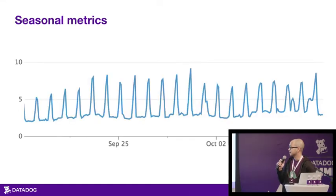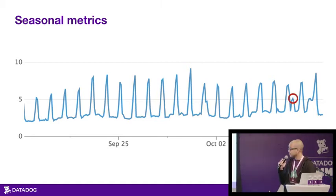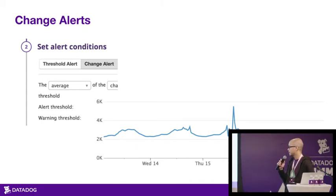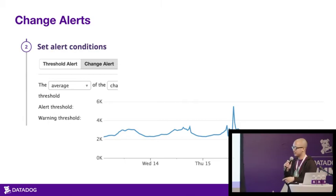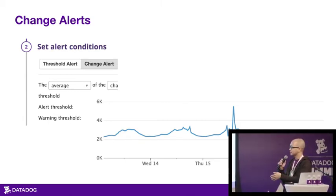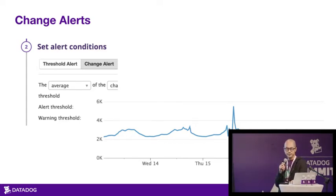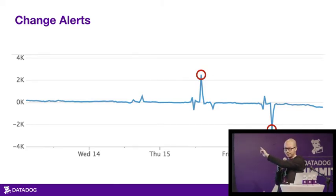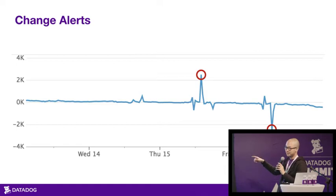There are also seasonal metrics. This metric spikes in the middle of every weekday — probably related to some user behavior. If you want to alert on a spike that happens in the middle of the night, a threshold alert won't catch it. Some people use change alerts for seasonal behavior — say you wanted to catch the spike in the middle of Thursday, comparing how different the metric was at that time of day from 24 hours before. What happens is the change alert shows that difference as a big spike on Thursday, but you'll also get alerted on Friday because that big spike wasn't there anymore.